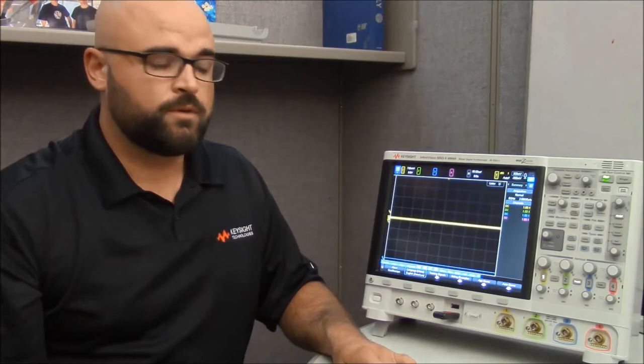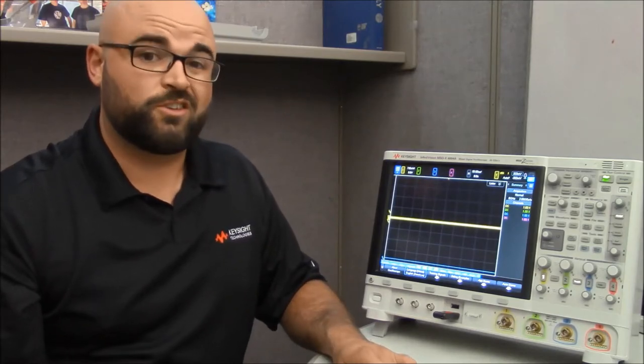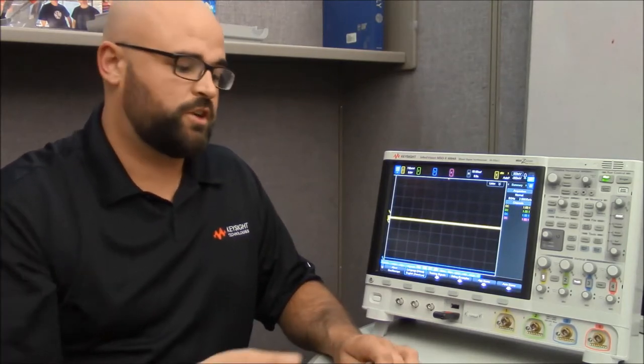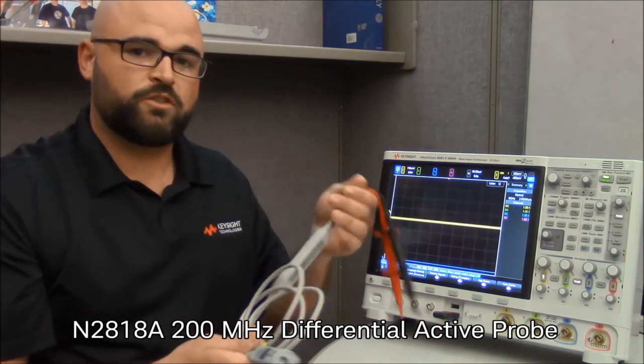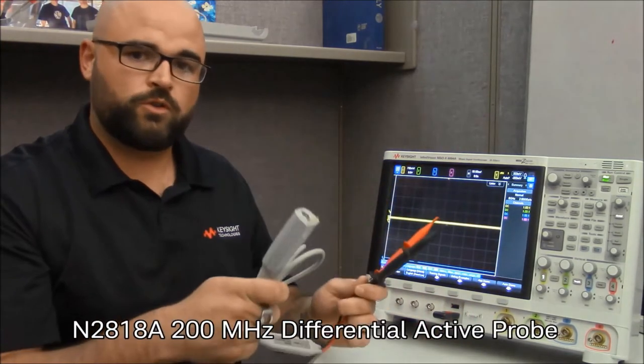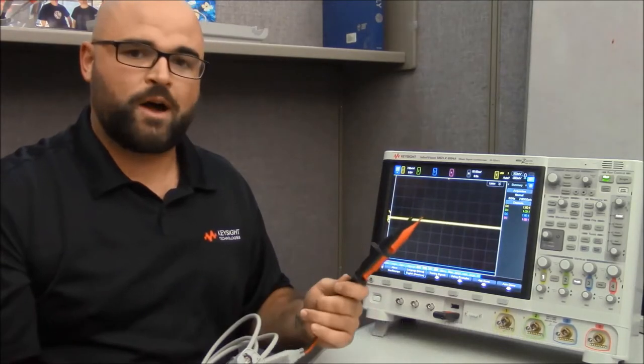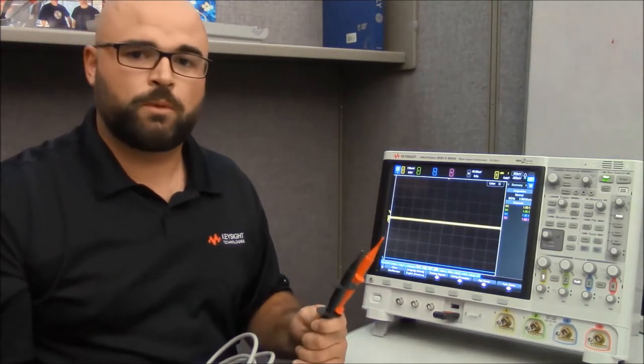Now your first concern is going to be probing. The MIL-STD 1553 bus is a differential bus encoded via Manchester. Keysight recommends the N2818A 200 MHz differential probe. It comes with our unique auto probe interface that self powers and self identifies the probe on the scope.